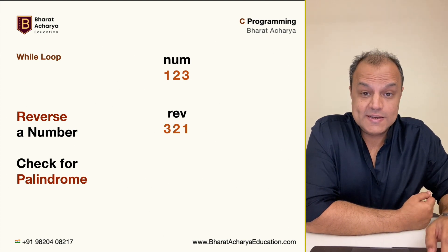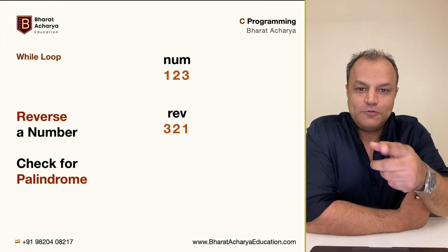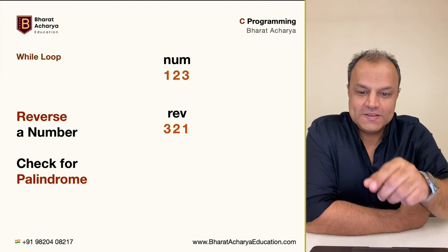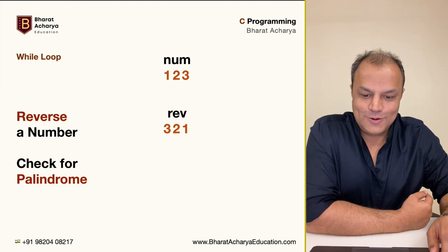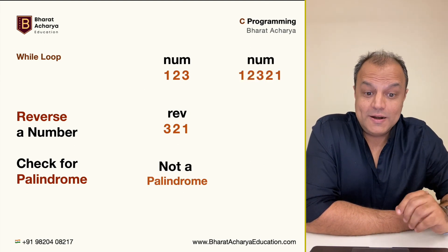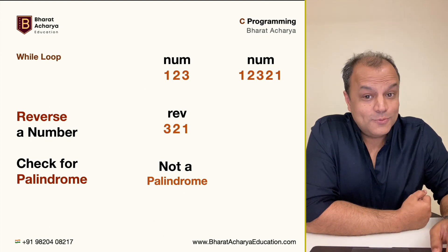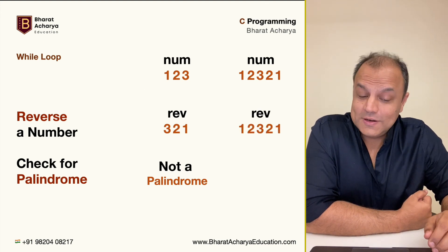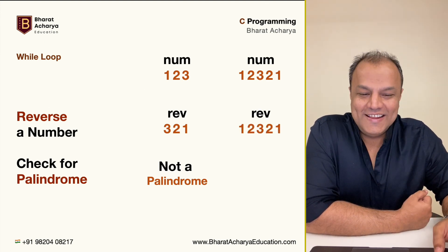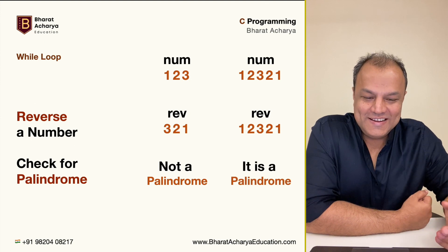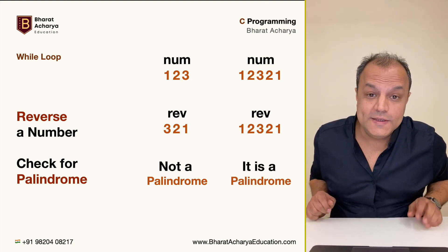What is a palindrome? Palindrome means the forward and the reverse are the same. So you compare the two numbers — if they are not the same, it's not a palindrome. But if you're given a number like 1 2 3 2 1, even after reversal it's still 1 2 3 2 1, so when you compare them, it is a palindrome.